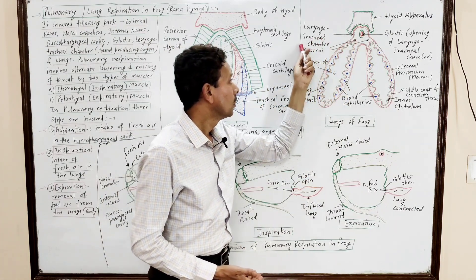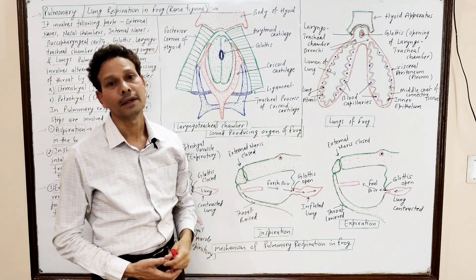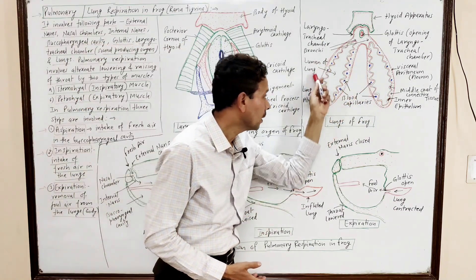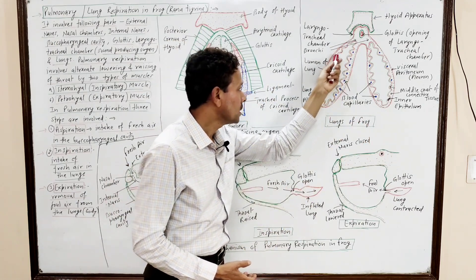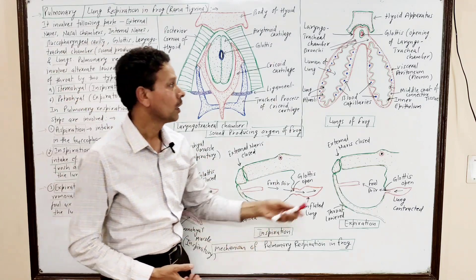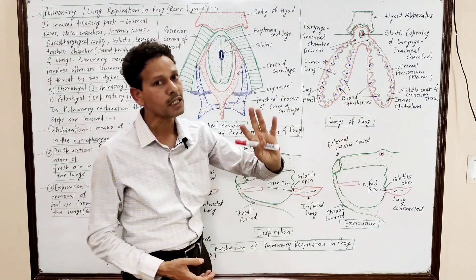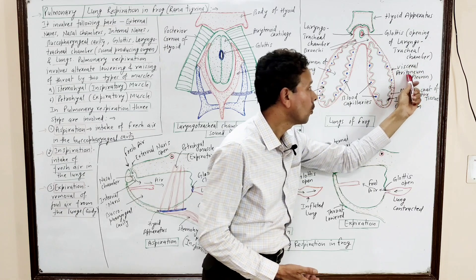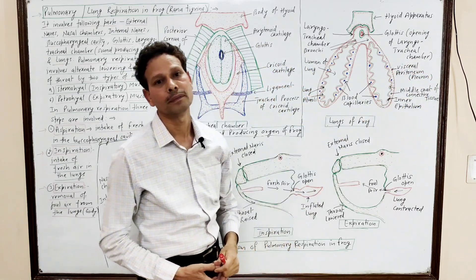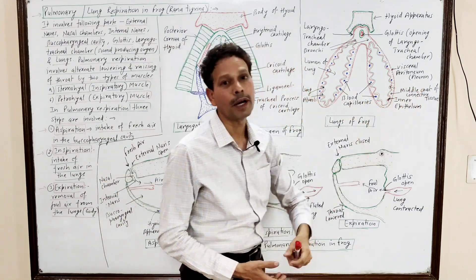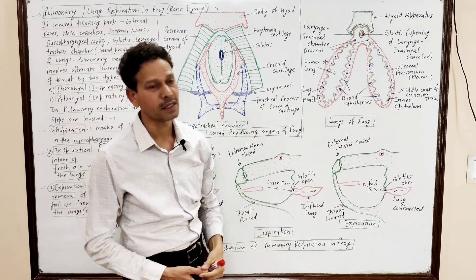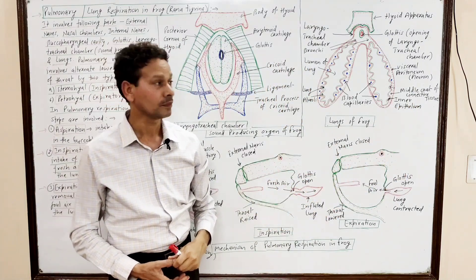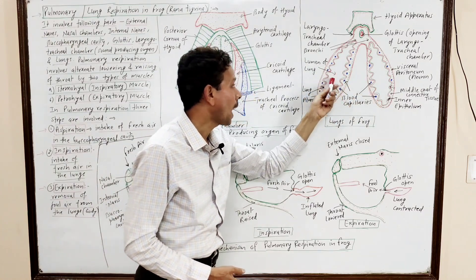Posteriorly, this laryngotracheal chamber opens into the bronchi, which lead into the lungs. In the lungs of frog, numerous alveoli are present. The wall of each lung is covered by three coats: the outer coat is visceral peritoneum or pleura; the middle coat is made up of connective tissue having blood vessels; and the inner lining is simple squamous epithelium. In the center of each lung, a cavity or lumen is present.